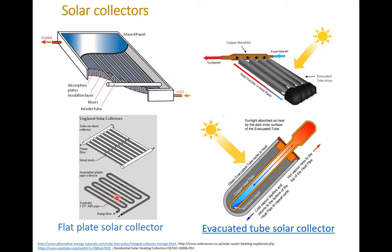The serpentine plastic pipe collector is just a black tube — like an irrigation tube. It acts as the absorber blade at the same time. It collects the heat from the sun and transfers it to the fluid inside. You have a fluid pumped through these pipes and it ends up at the outlet of this serpentine plastic pipe arrangement.